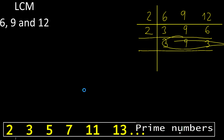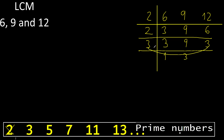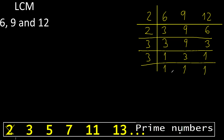Equal — cannot be divided by 2. Can be divided by 3. Divided by 3 is 1. 3 divided by 3 is 3, 3 divided by 3 is 1. Can be divided by 3. 3 divided by 3 is 1. Cannot be divided by 3, therefore equal. Okay, 1, 1, 1 — finish it.